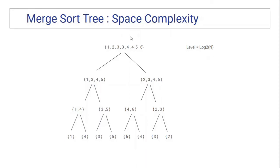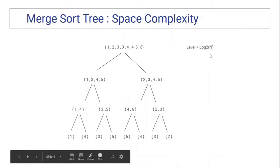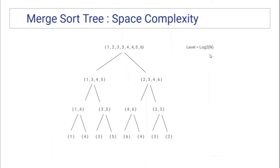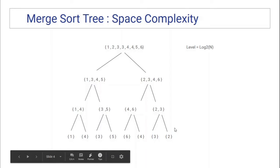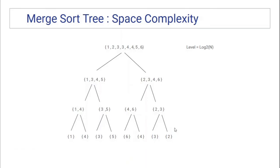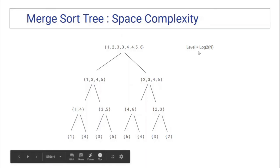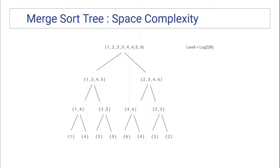Now, how many elements are there at each level? At level zero there are n elements; at level one there are n elements; at level two there are n elements; and at level three there are n elements. At each level we have exactly n elements. There are log n levels and n elements at each level, so the total space complexity is O(n log n). The space complexity of Merge Sort Tree is n log n, while for a regular segment tree it is roughly O(n).